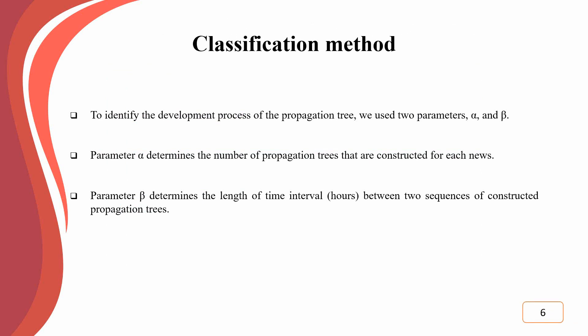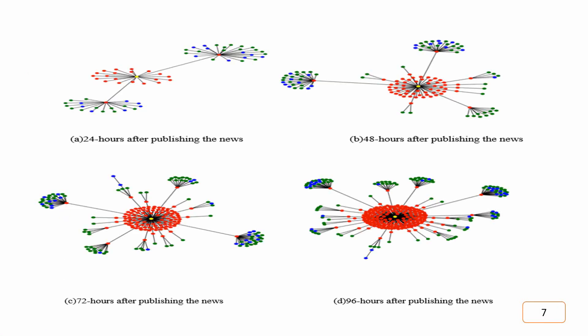To identify the development model of the propagation tree, we utilize two parameters: alpha and beta. Parameter alpha determines the number of propagation trees that are generated for each news article, and parameter beta defines the time interval between two consecutive generated propagation trees in hours. This figure represents the development process of the propagation tree for a fake news article, assuming alpha equals 4 and beta equals 24.